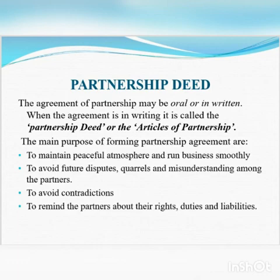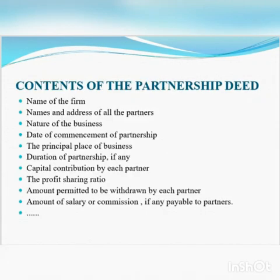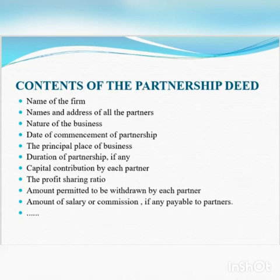The following things are included in the partnership deed: name of the firm; names and addresses of all the partners; nature of the firm; name of the business; date of commencement of partnership; the principal place of business; duration of partnership; capital contribution by each partner; profit-sharing ratio; amount permitted to be withdrawn by each partner; amount of salary or commission payable to partners; and rights, duties and liabilities of partners.